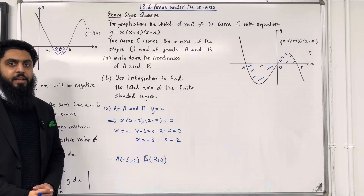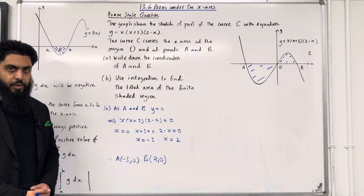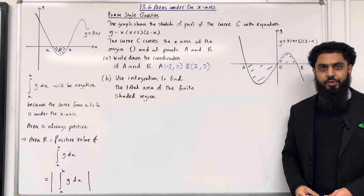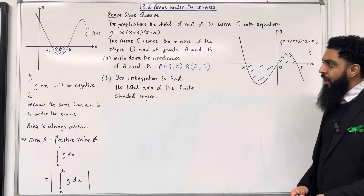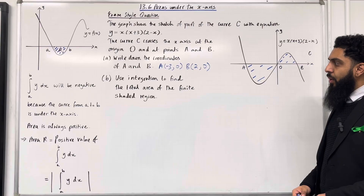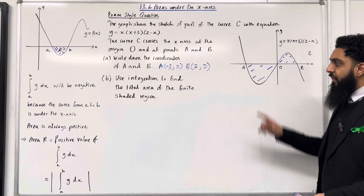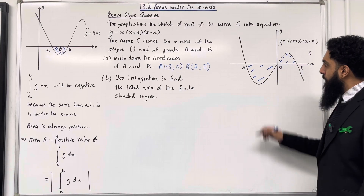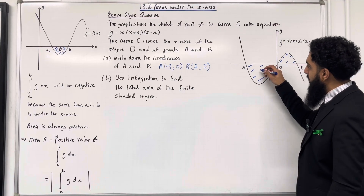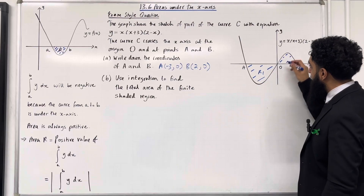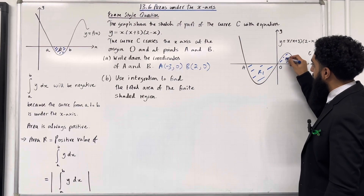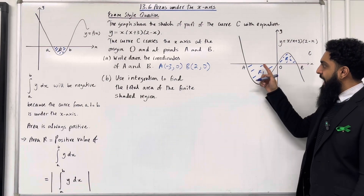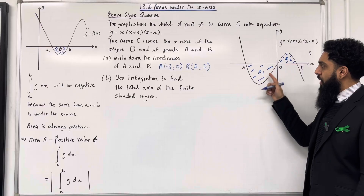This completes part a of the exam-style question. Moving on to part b: use integration to find the total area of the finite shaded region. This shaded region I'm going to call R1, and this shaded region I'm going to call R2.